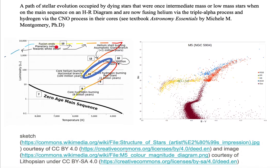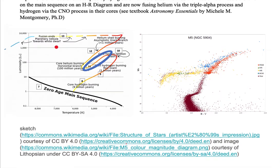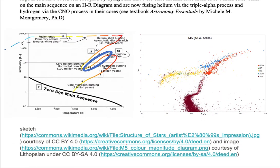We have stars that are now fusing hydrogen and helium by different processes than when they were once on the main sequence of an H-R diagram.